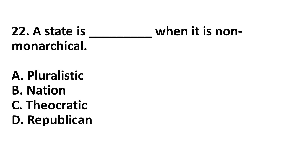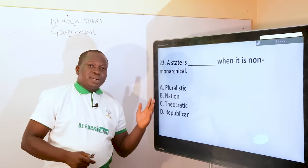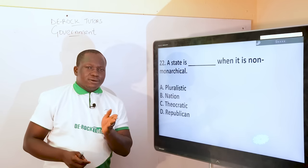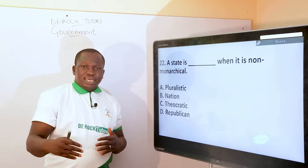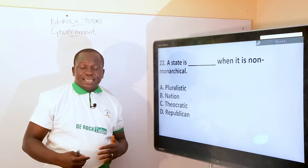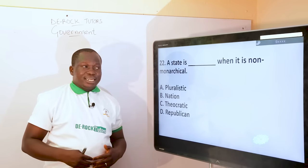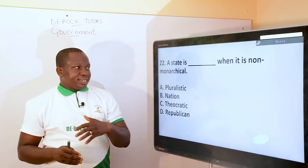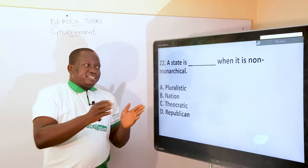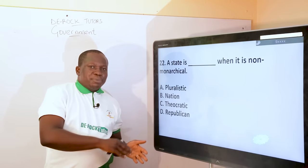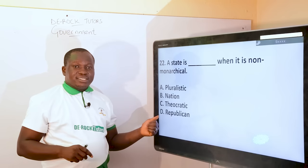Next question: a state is what when it is non-monarchical in government? A state is either republican or monarchical — or republican versus military. Any state ruled by an elected citizen is a republic, or any dispensation in which citizens freely elect their leaders. When a state is non-monarchical, it is republican. A state is civilian when it is not following monarchy; a state is republican when it is not following a military system of government. The correct answer is D, Republican.